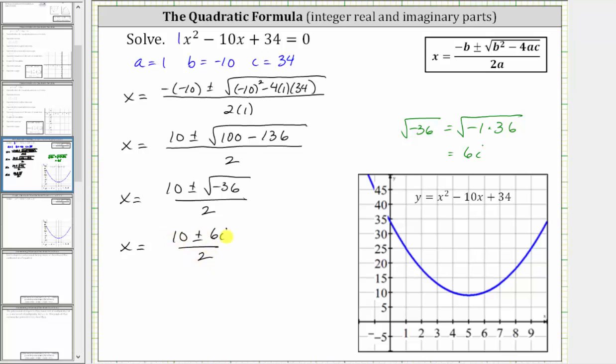or the real part and the imaginary part. We would have 10 divided by two plus or minus six halves i. So we have x equals five plus or minus three i.